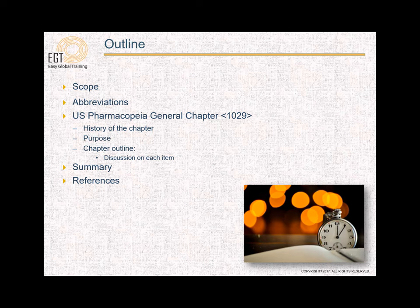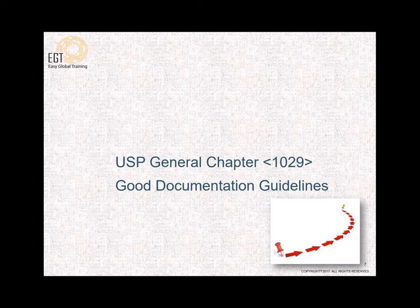In this presentation we are going to review the scope first, to give you an idea of what we are going to cover. A list of abbreviations used during the presentation is also provided in case you want to look at this later. We will then discuss U.S. Pharmacopeia General Chapter 1029 in detail. First I will provide a brief history of the chapter and how it was generated, then we will go into the purpose of the chapter, followed by the chapter outline and a discussion on each item. Finally, there is a summary slide and references presented for your review.